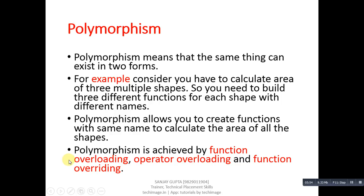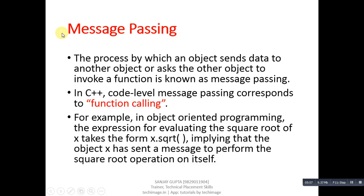Next is message passing. The process by which an object sends data to another object, or asks another object to invoke a function, is known as message passing. In C++, at the code level, message passing corresponds to function calling — so message passing is equivalent to function calling. For example, the expression for evaluating the square root of x takes the form x.sqrt(), implying that the object x has sent a message to perform the square root operation on itself.